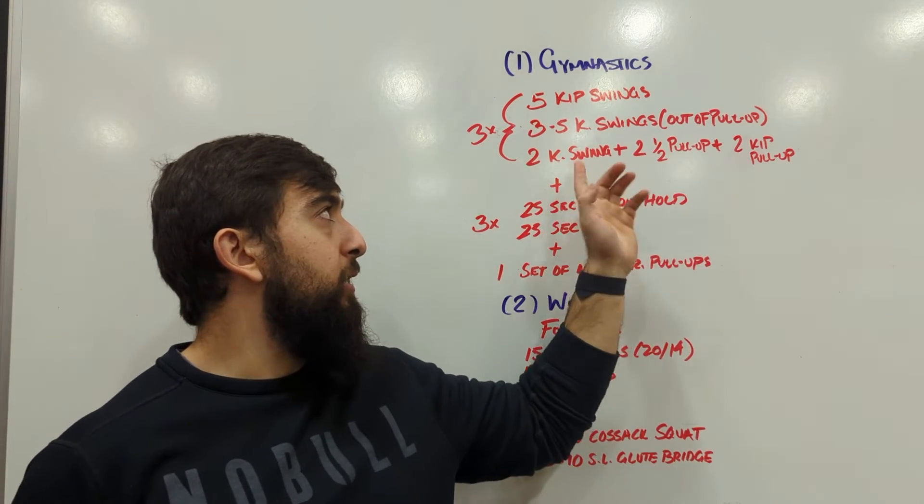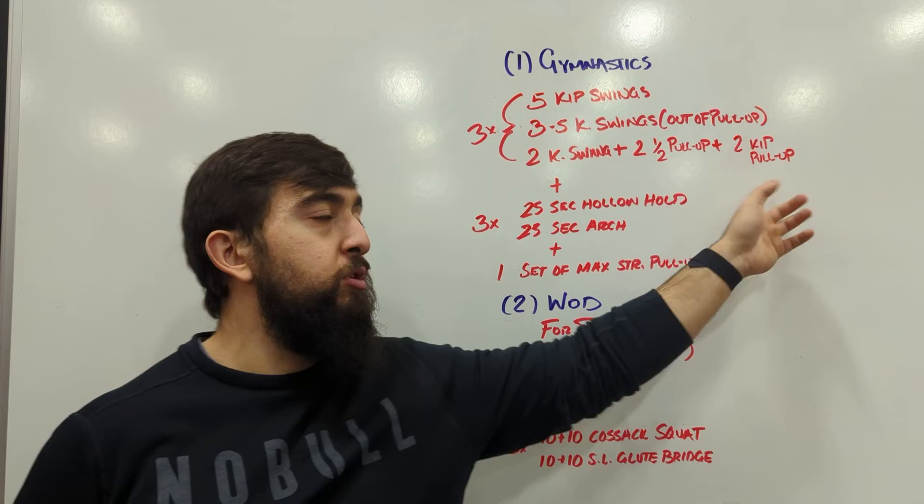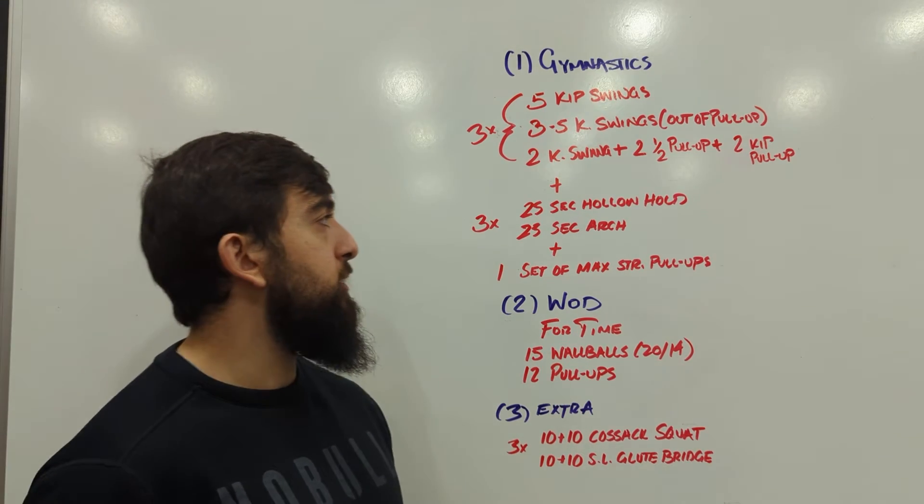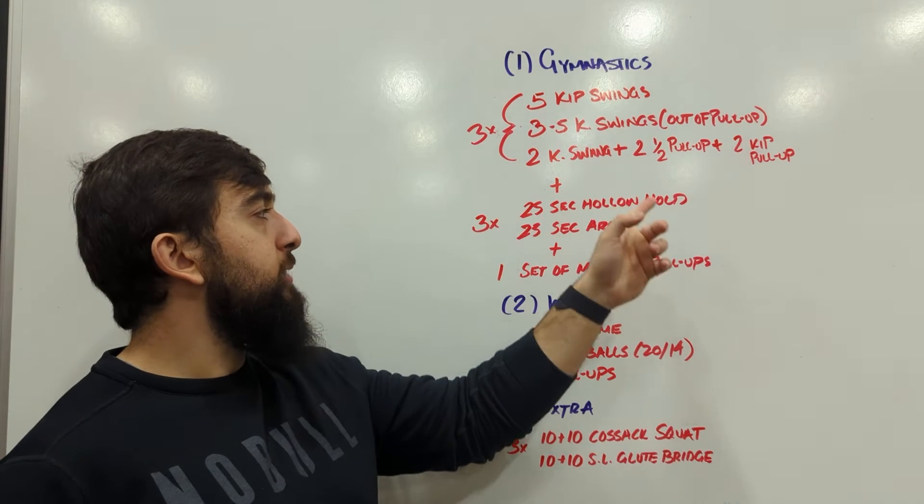If this is too easy, feel free to go let's say two kip swings, two kipping pull-ups, two chest to bars, or even go more if you want to add a bar muscle up to that.